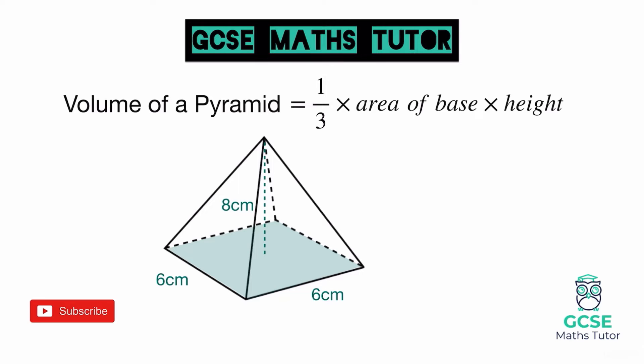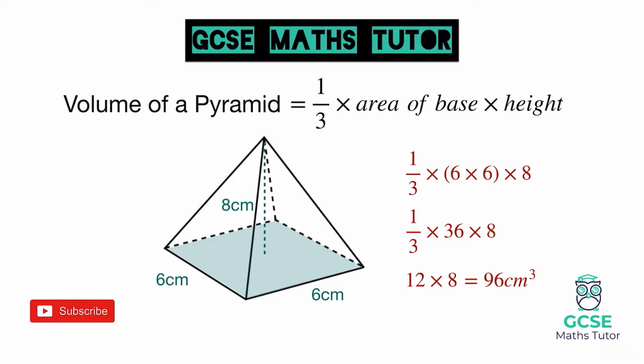Using the formula, we do one third multiplied by the area of the base — the base is a square so we do six times six — then multiply by the height of eight. Six times six simplifies to 36. If you don't have a calculator, a third of 36 is 12, so we'd do 12 times 8, which gives us 96. This is a volume, so we would say 96 centimetres cubed.